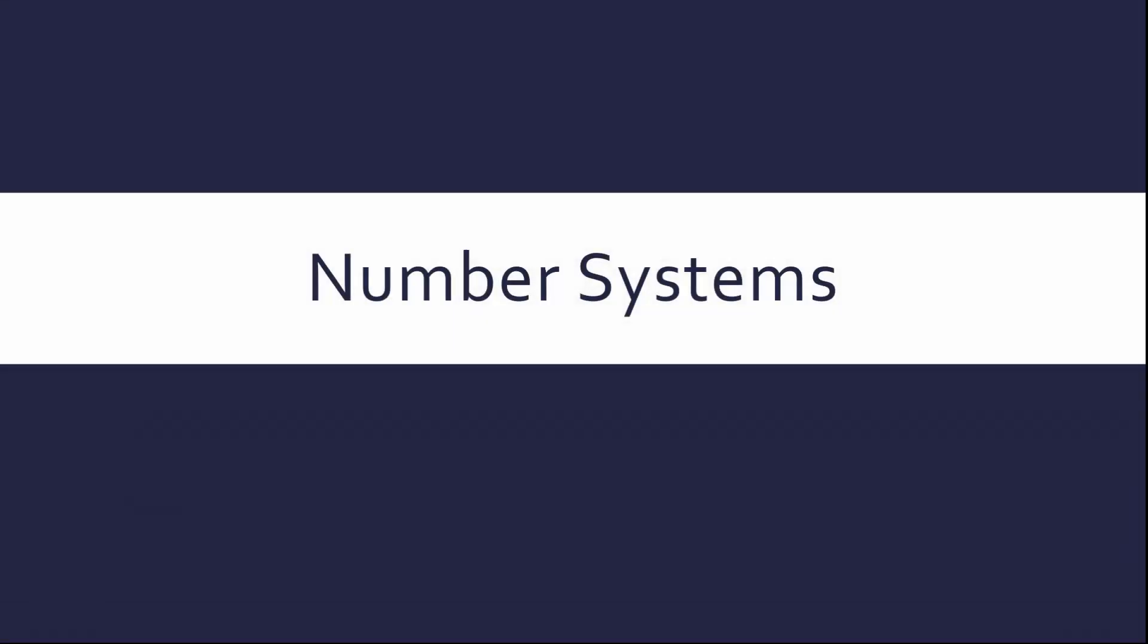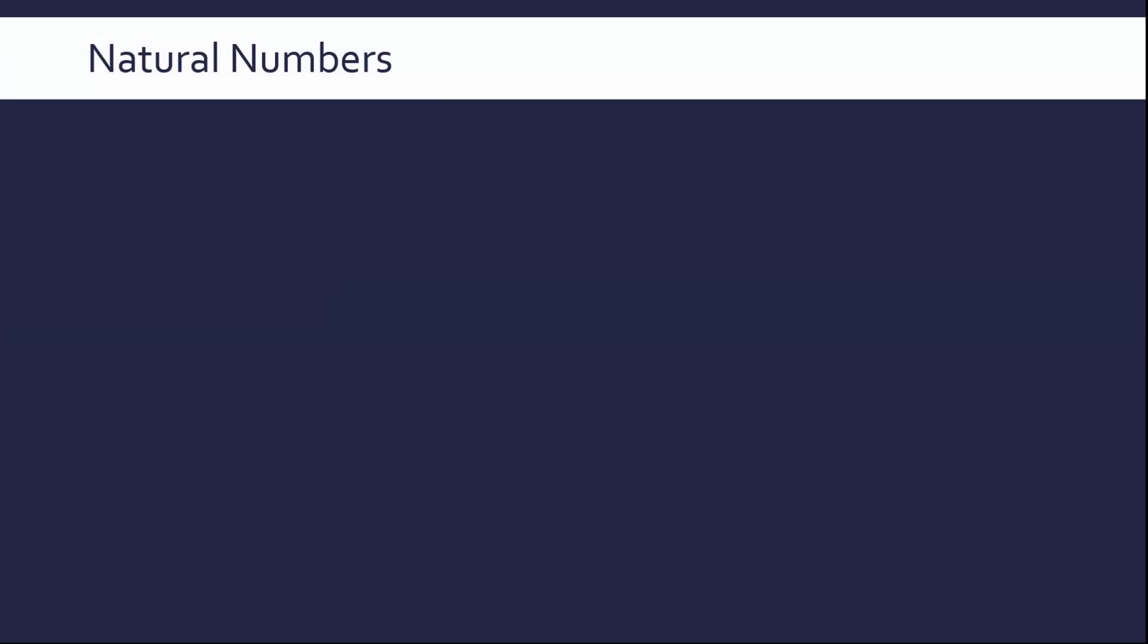Hello and welcome to the first in a series of videos on data representation and maths for computer scientists. We're looking first of all at number systems, a few different sets of numbers which we can use. Really, a number system is a way of specifying a range of different possible numbers.